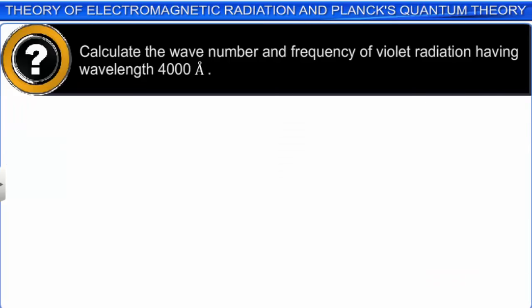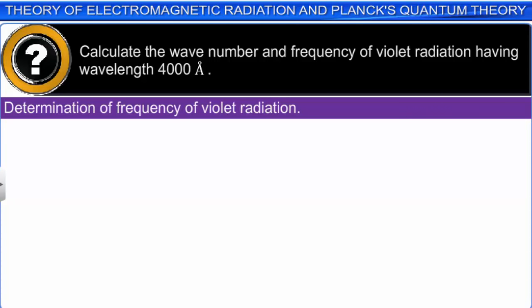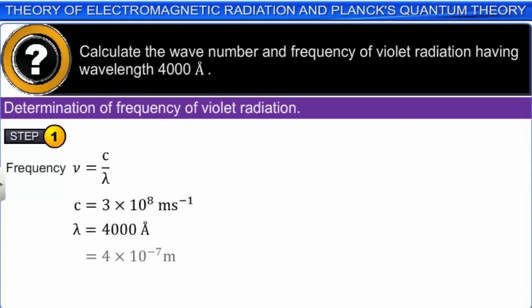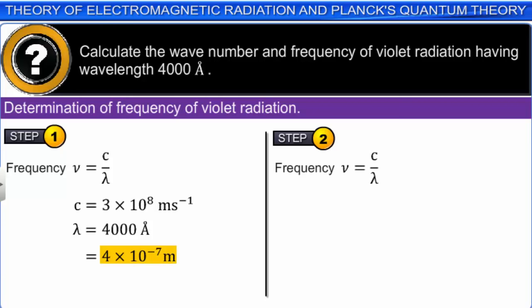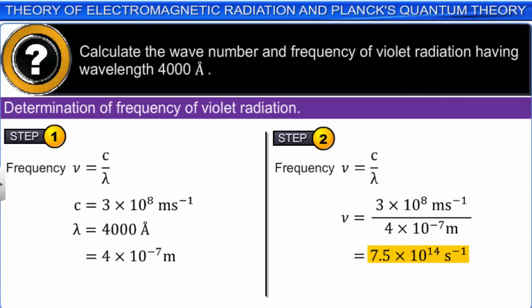Now, to calculate the frequency of violet radiation: nu = c/lambda. Substituting lambda = 4 × 10⁻⁷ meters and velocity of radiation = 3 × 10⁸ meters per second, we finally get 7.5 × 10¹⁴ per second.